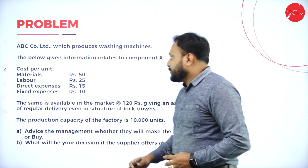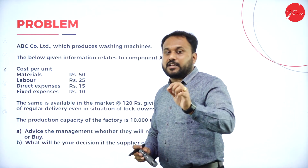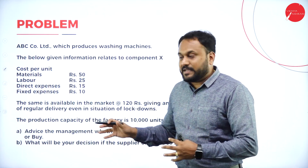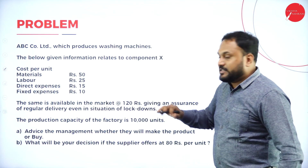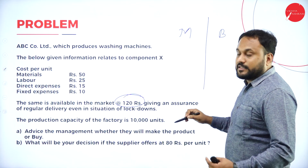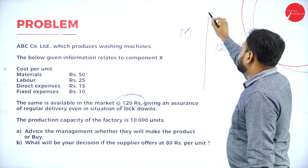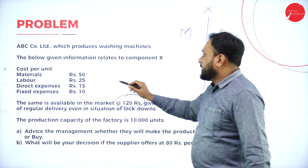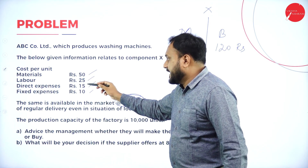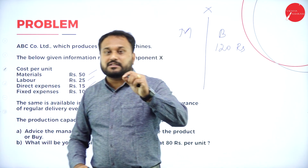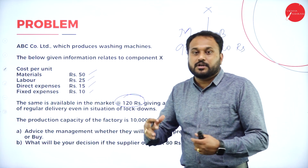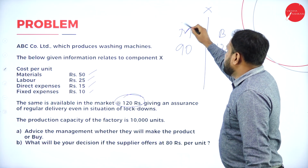This is called the Make or Buy Decision. Whenever this question type appears, always subtract the fixed cost from the total cost. Cost per unit is given; the product is also available in the market at ₹120. To make: DM ₹50 + DL ₹25 + VO ₹15 + Fixed ₹10 = ₹100, but deduct fixed cost of ₹10, so making cost = ₹90. Since ₹90 < ₹120, we should make the product.